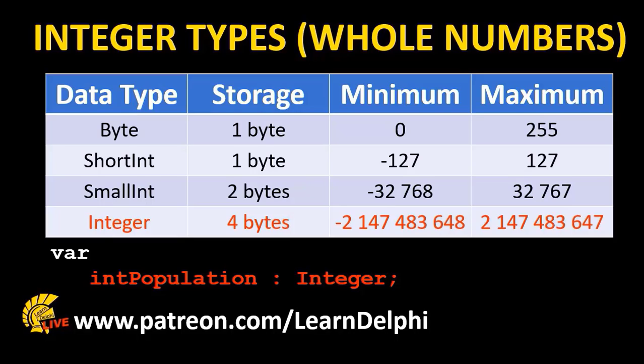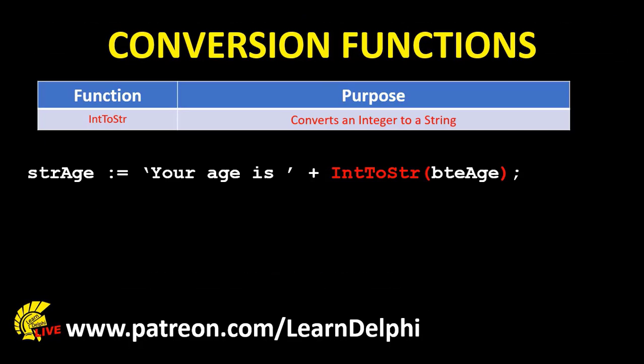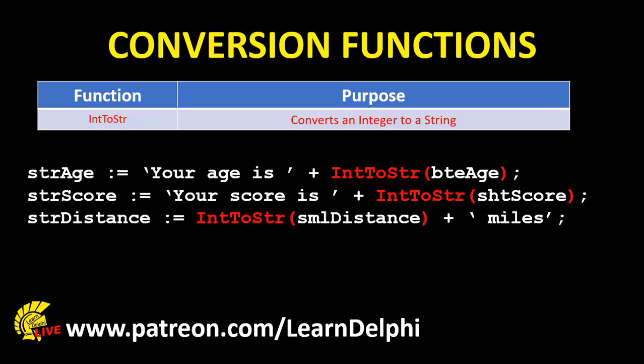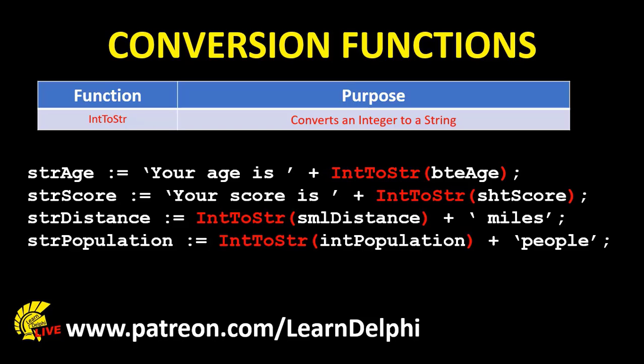If you want to concatenate any of these integer types to strings, you must first convert them to strings. The IntToString function converts any integer type to a string. Here is an example of a byte variable named 'pteh' — it is first converted to a string with the IntToString function before it is concatenated and saved into a string variable. This statement does the same, but in this case the integer type is a short int called 'shtscore'. This example does the same with a small int, and this one is for an integer called 'int population'.